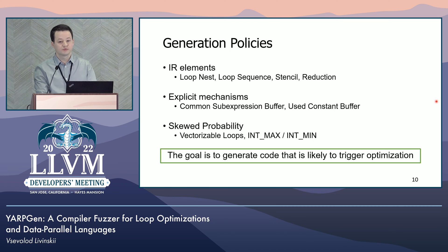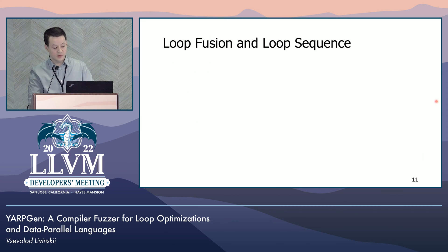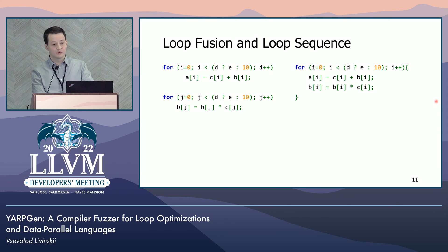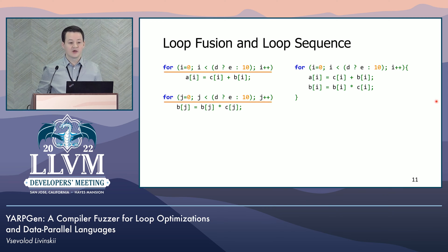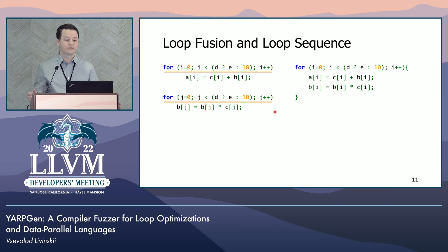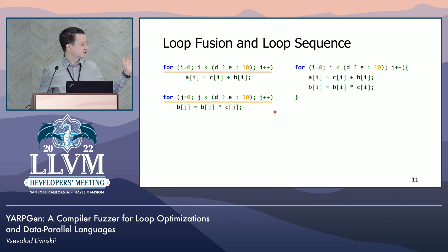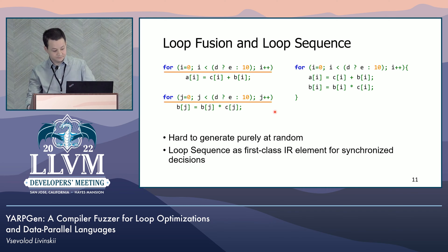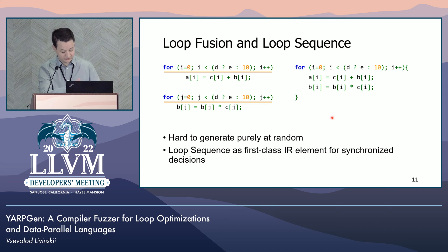Now let's take a closer look at two loop-specific generation policies. Let's say we want to trigger loop fusion. To do that, we need two consecutive loops with exactly the same iteration space and no dependencies. The odds of getting that structure are quite low due to the many choices the fuzzer can make, so if we rely on purely random generation, this case is unlikely to happen. That's why we introduced a loop sequence statement to make synchronized decisions — like enforcing the same iteration space — between large structural elements of the test.